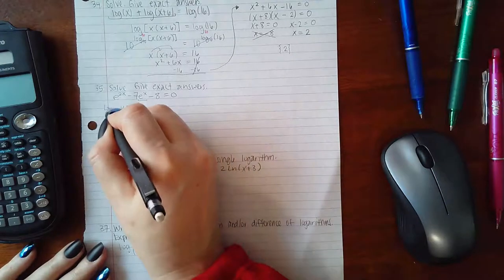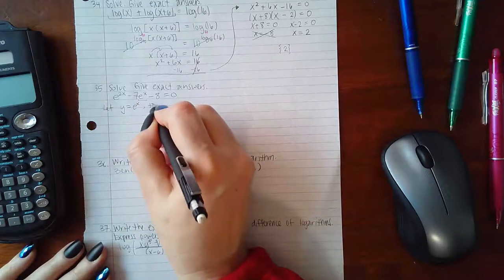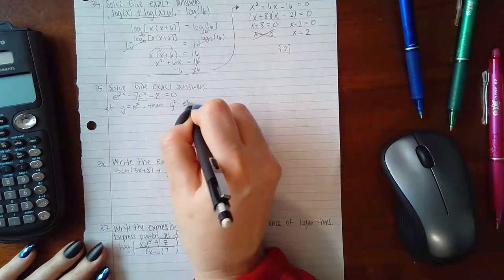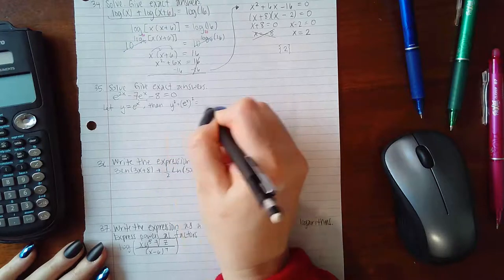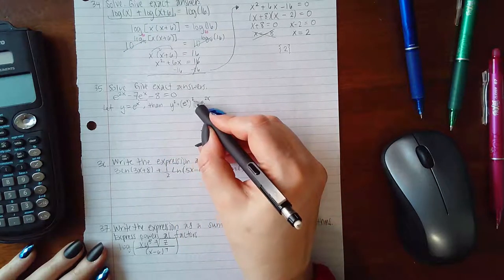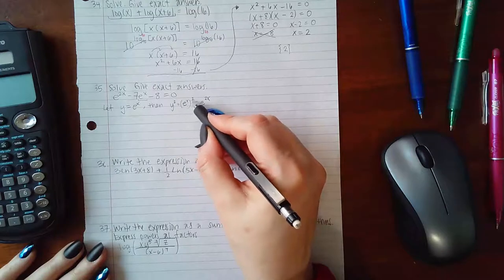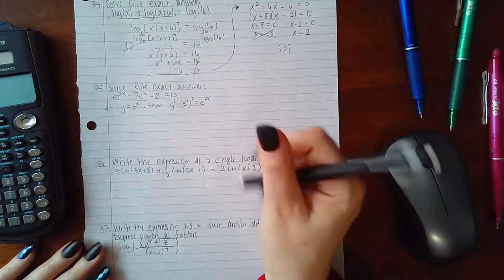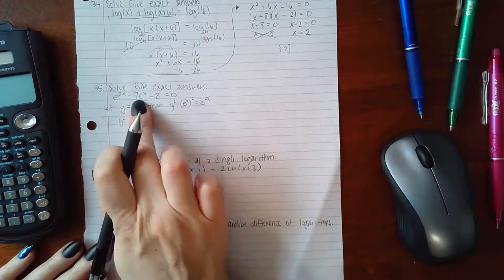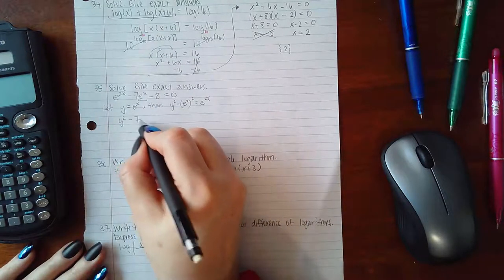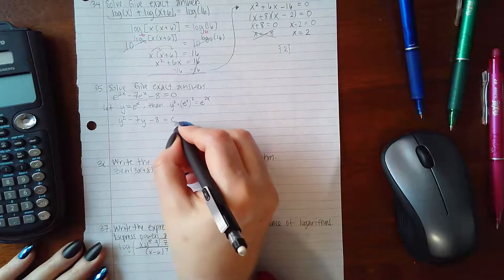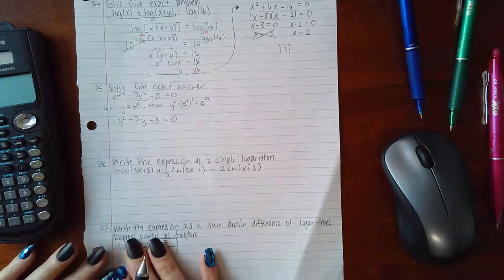That means y squared would be e to the x squared, which is e to the 2x. Remember when you have an exponential raised to an exponent, you just multiply the exponents together. So this term will become y squared, this term will become negative 7y, and the minus 8 stays the same, no substitution required there, or for the 0.